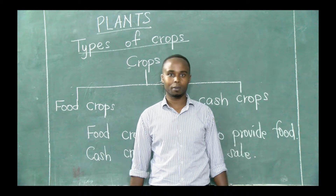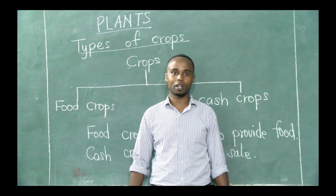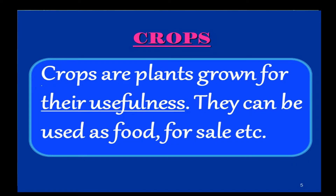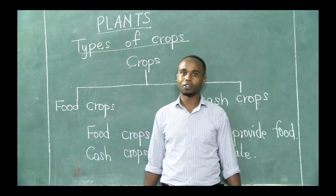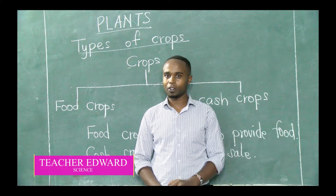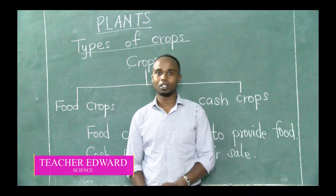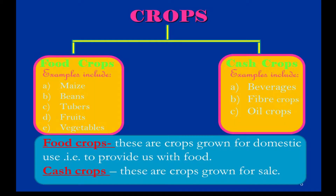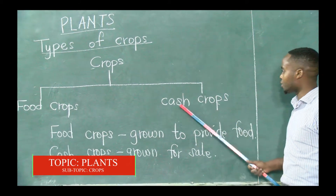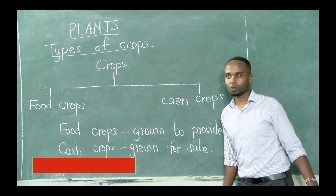So you know about crops. I just want to see whether you can recall what you were taught in class 4. Crops are plants that are grown by farmers. And crops are classified or divided into two groups. We have food crops and we have cash crops. Those are the two groups of crops.